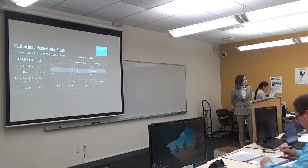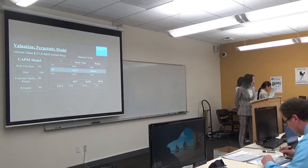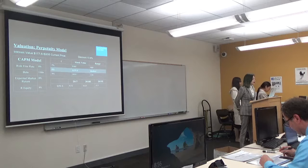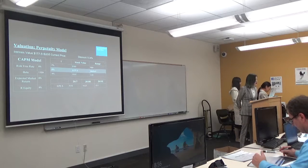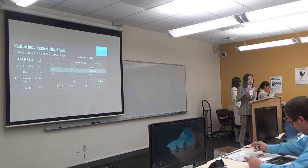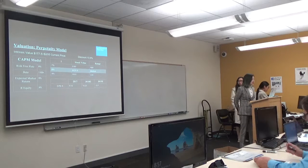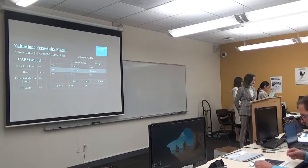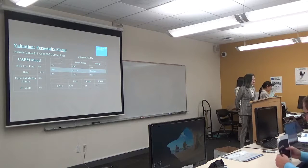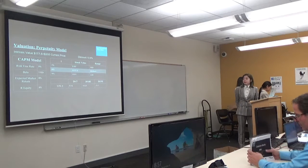On the perpetuity model, the intrinsic value is 177.5, and we got the 8% medium range, and the discount should be 13.4%.